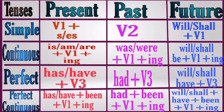In present perfect tense we used 'has/have' plus V3. The past of 'has/have' is 'had,' so in past perfect tense we use 'had' plus V3. Similarly, in present perfect continuous we used 'has/have' plus 'been' plus V1 plus '-ing.' In past perfect continuous, we replace 'has/have' with 'had,' so the structure becomes 'had' plus 'been' plus V1 plus '-ing.'